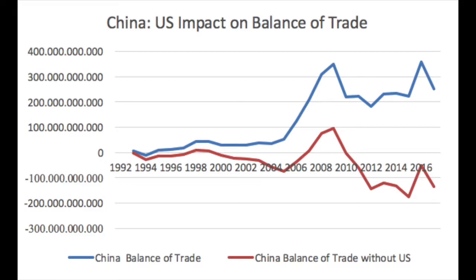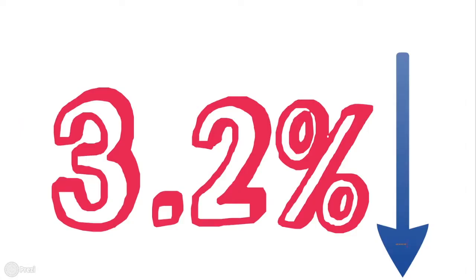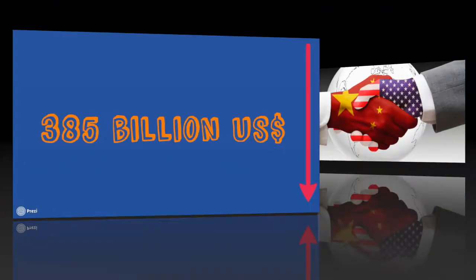The red line represents the balance of trade without U.S. exports, which, as we can see, would become negative. This last analysis illustrates how the loss of the U.S. market would directly impact the Chinese GDP over time. In 2016, for instance, it would have caused a reduction of 3.2% in GDP, meaning a loss of $385 billion.